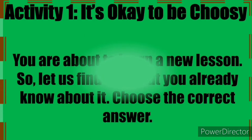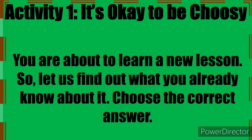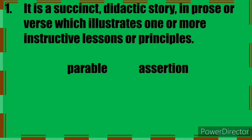Let's have activity number one: It's Okay to be Choosy. You are about to learn a new lesson, so let us find out what you already know about it. Choose the correct answer. Number one: It is a didactic story in prose or verse which illustrates one or more instructive lessons or principles. Parable or assertion?